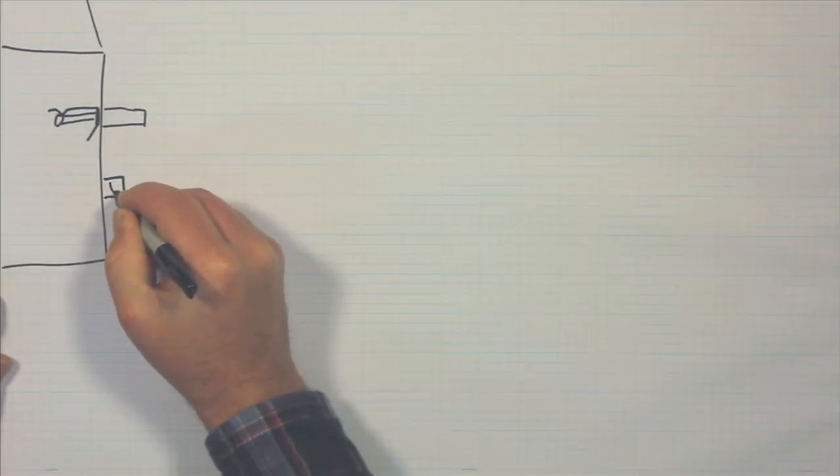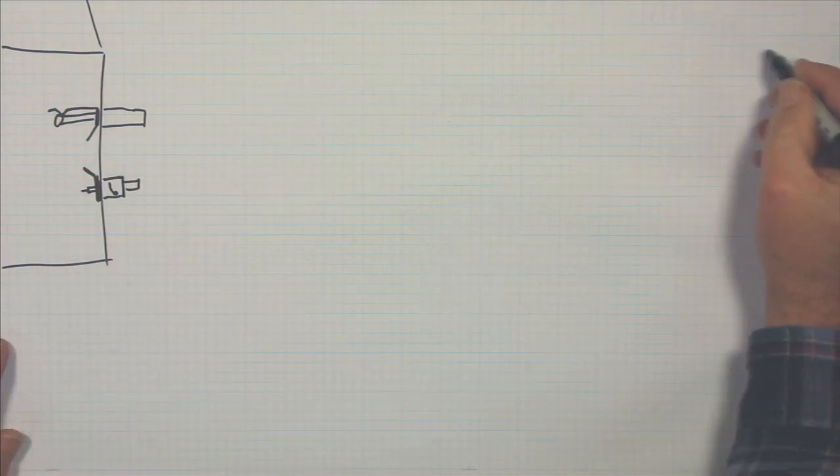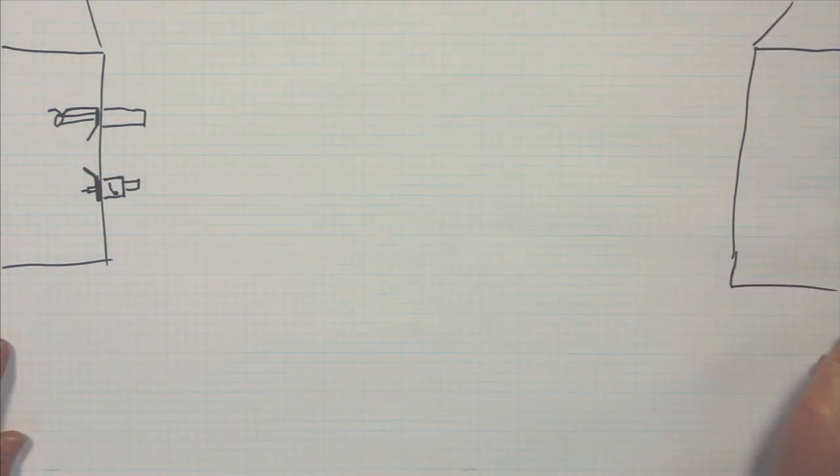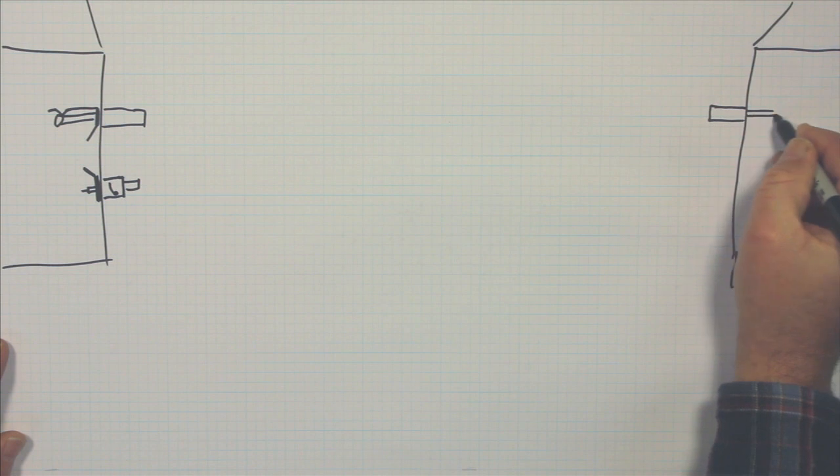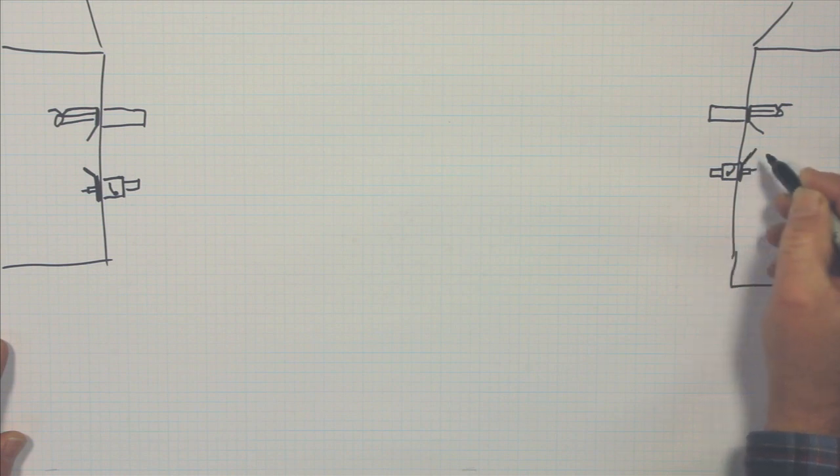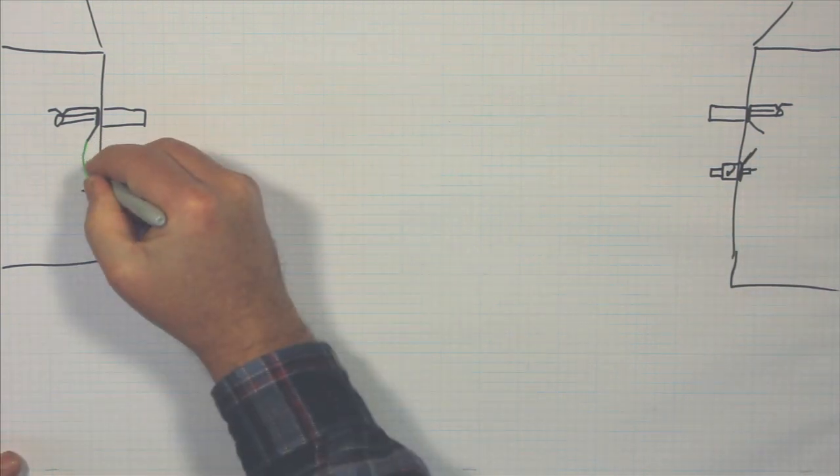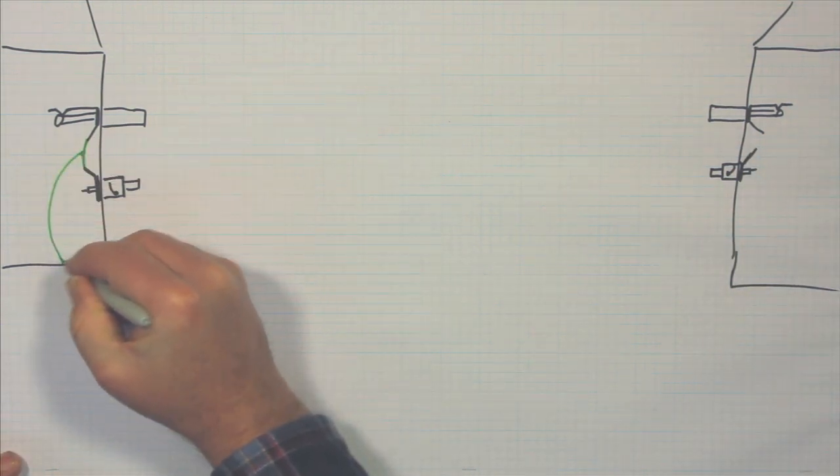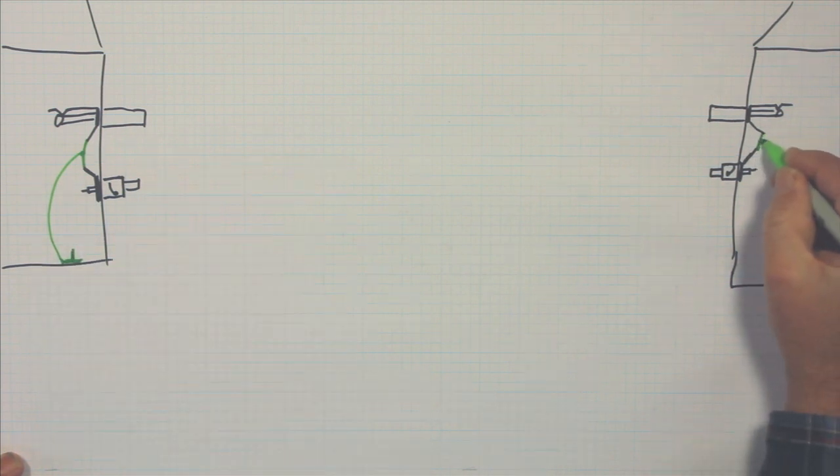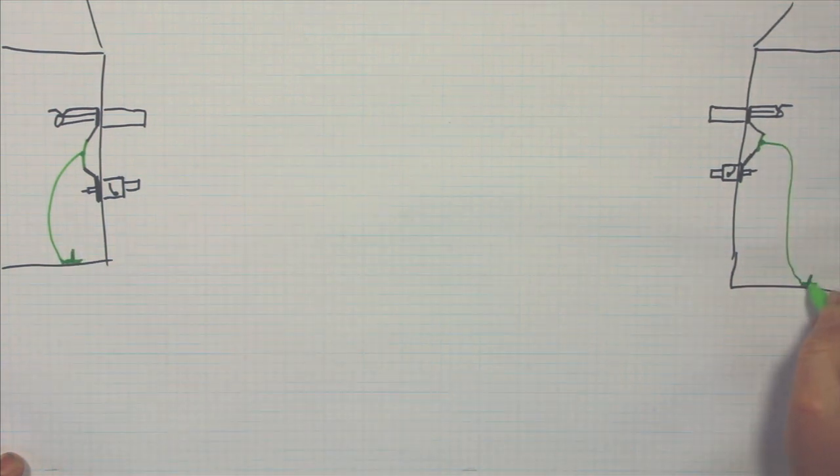The loop is where a voltage loops or returns through a ground. In the case of audio and video circuits, the return path is through the shield of the cable connecting two pieces of equipment that do not share the same electrical ground.